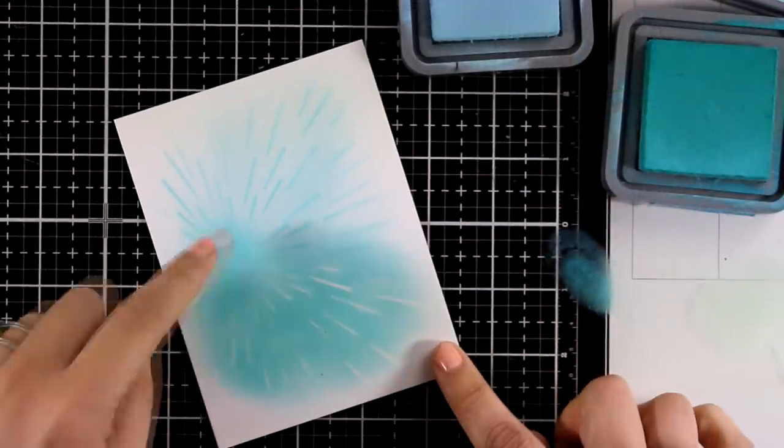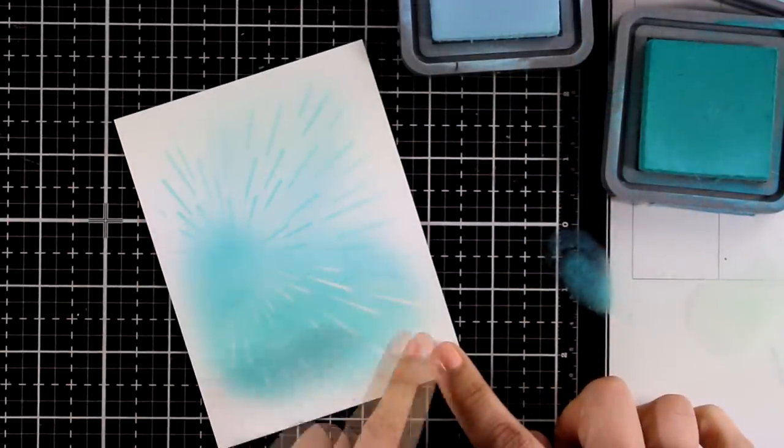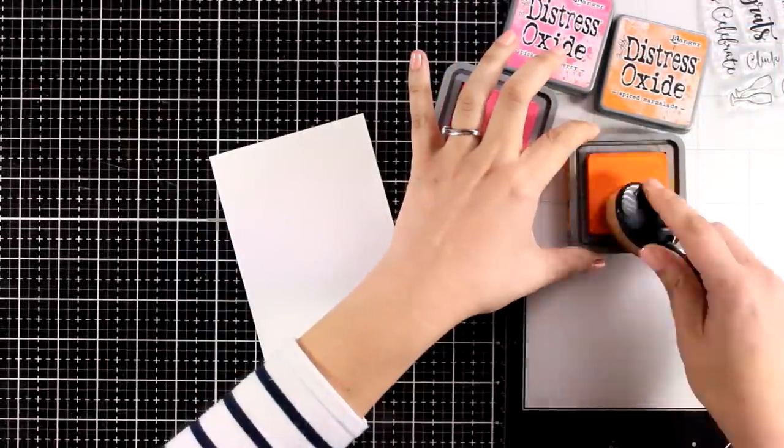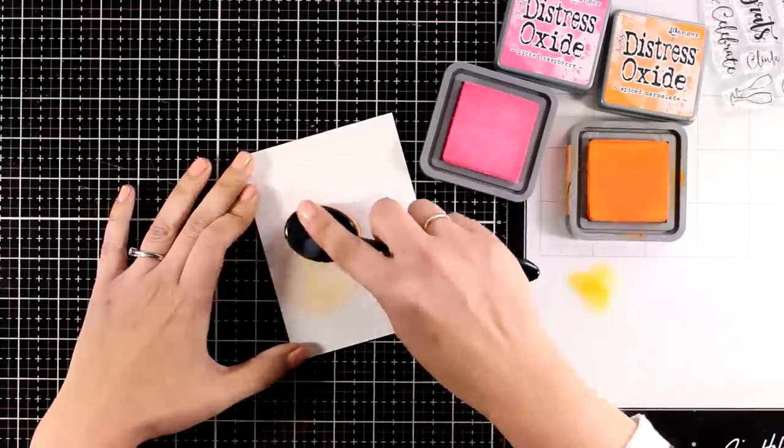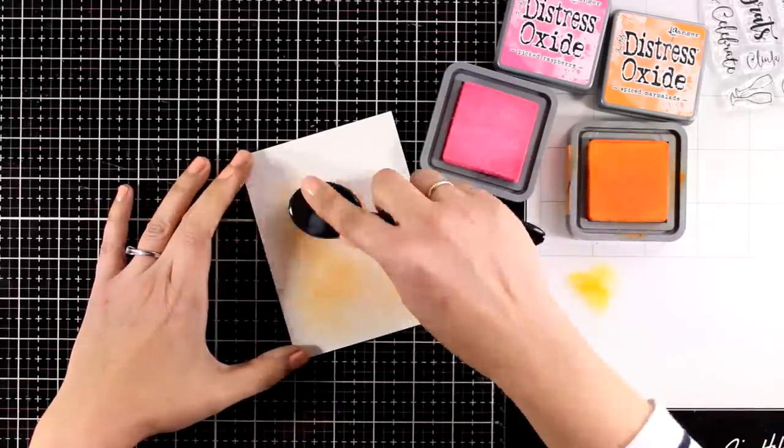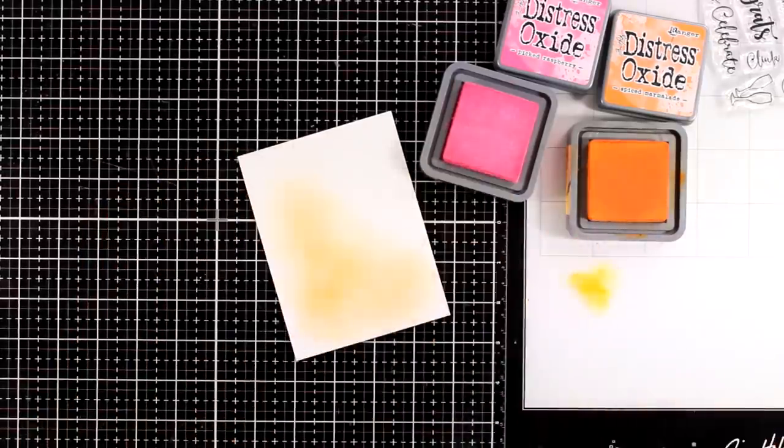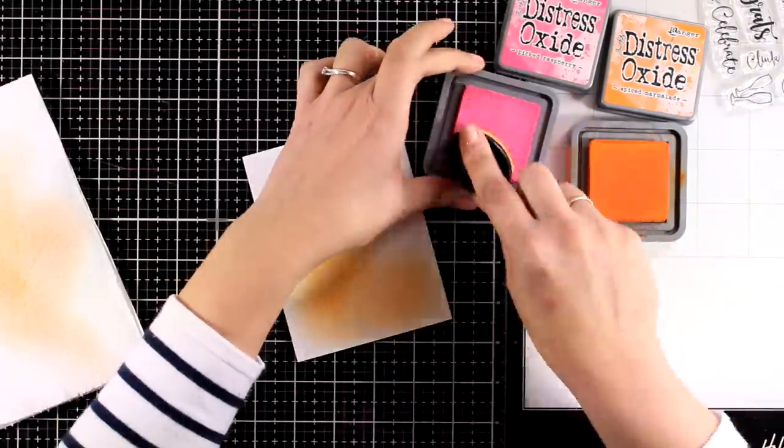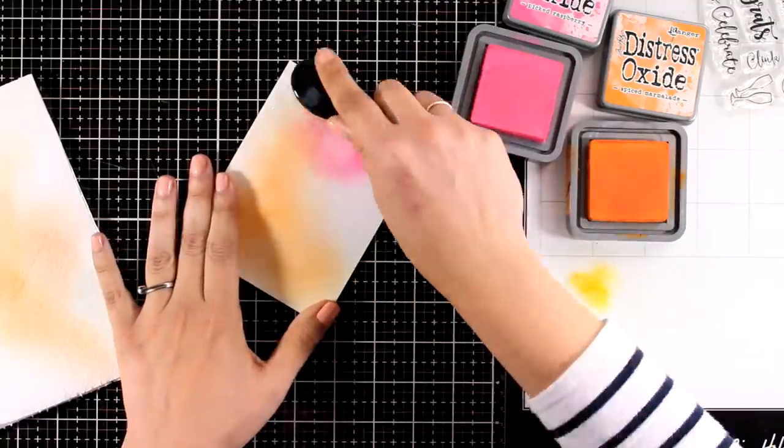By the way the paper that I am working on is by Arteza and I am working on the drawing pad paper, you will find it linked down below. This is the paper that I am using with my wax pencils and I find that Distress Oxides blend beautifully on top of it and I can easily lift color with a baby wipe from that and you can see that whenever I lift color it goes back to being white.